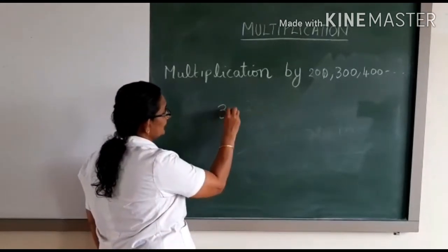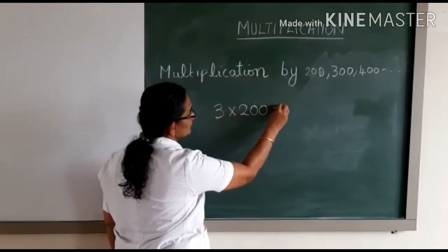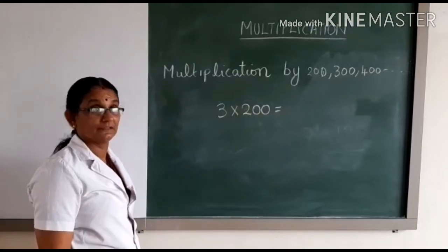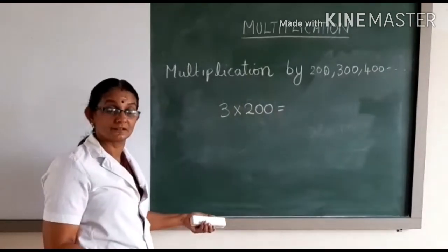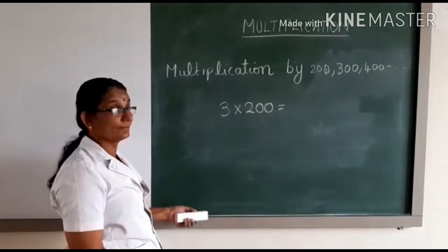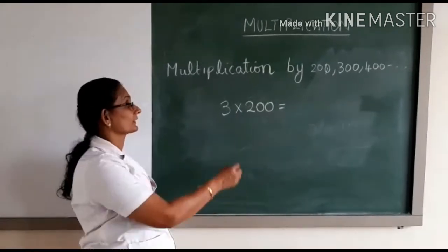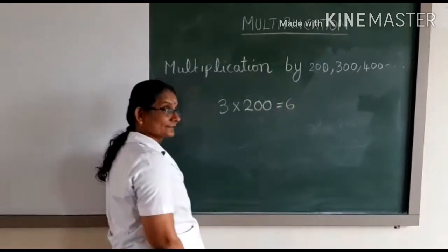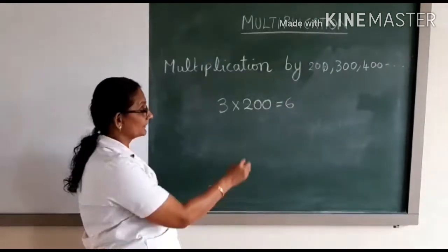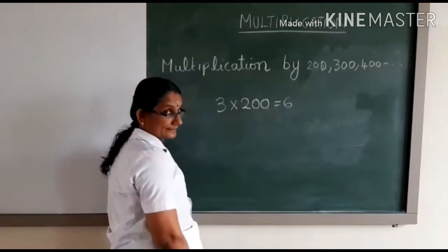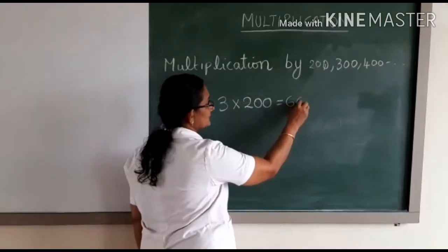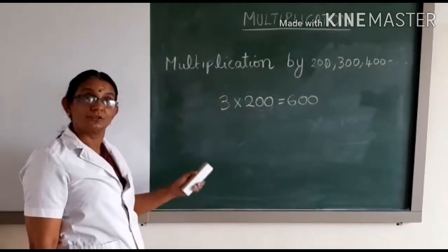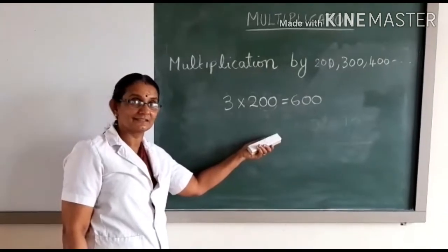Example: 3 into 200. First, just like when you multiply a number with 10, 20, and so on, the same method you have to follow here. What is 3 into 2 first? 3 into 2 is equal to 6. Then how many zeros are there? There are two zeros, so you have to place two zeros to the right. That is the answer. Isn't it easy?